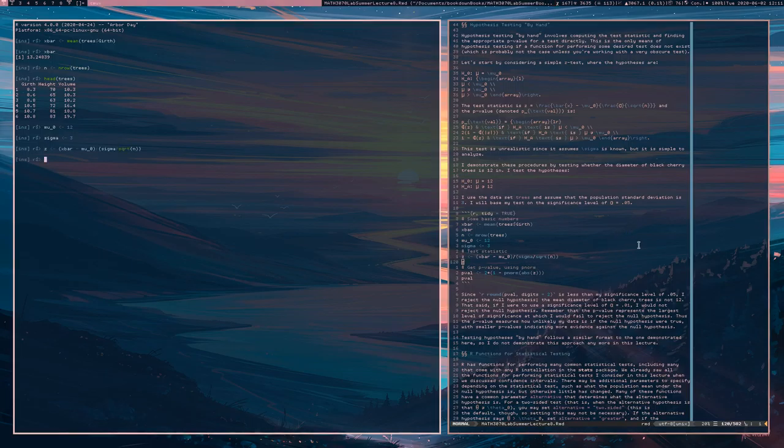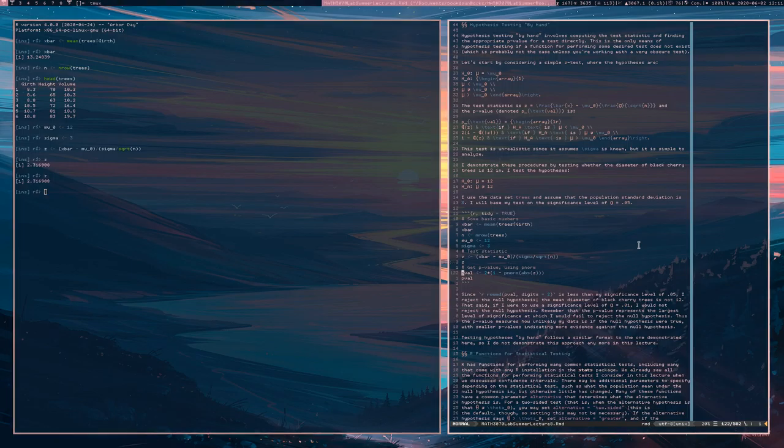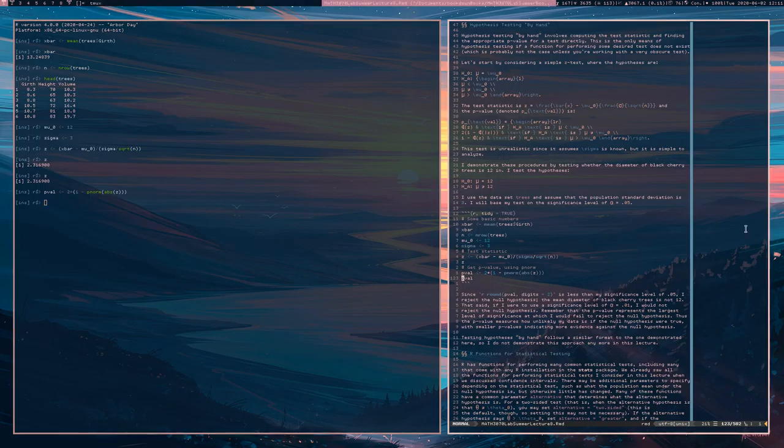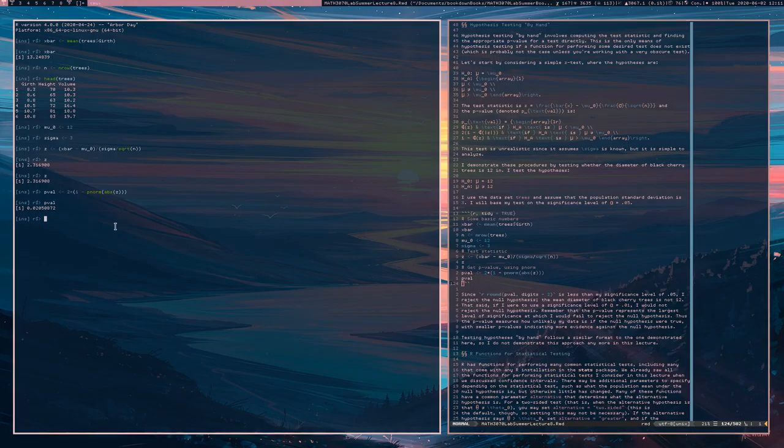And then I compute this test statistic with x-bar minus mu naught divided by sigma over the square root of N. Here is the test statistic, which is often of interest in and of itself. And here I compute the P value using that formula for the case where the alternative hypothesis is two-sided. And here is the resulting P value. So this P value is less than 0.05, which was my pre-specified significance level. Therefore, I'm going to reject the null hypothesis.